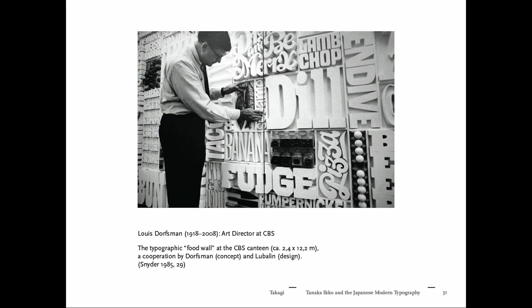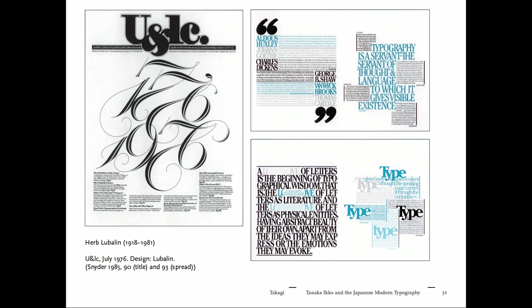Lou Dorfsman was art director at CBS and had a very broad view on how corporate design should work, really creating an identity for a whole company — Tanaka learned from him how to become an art director. Herb Lubalin, on the other hand, was the more artistic person who played with type and made type become visual. Tanaka admired his work for its liveliness and expressiveness.